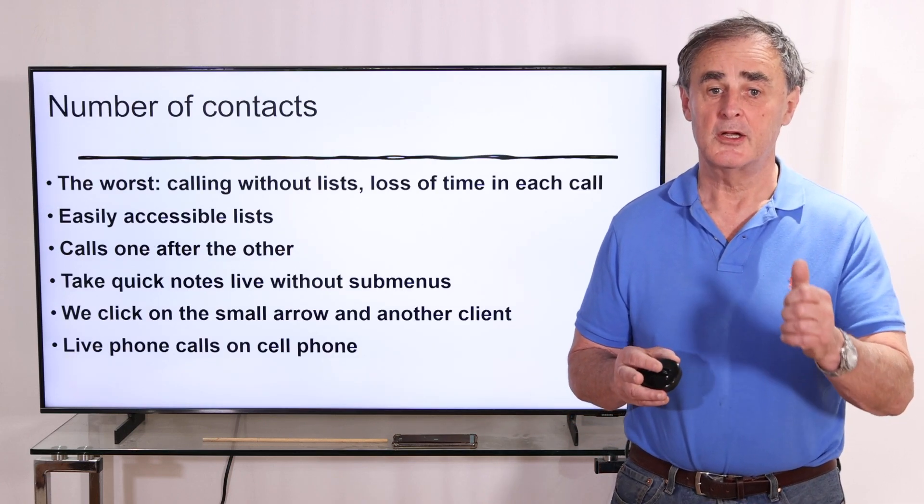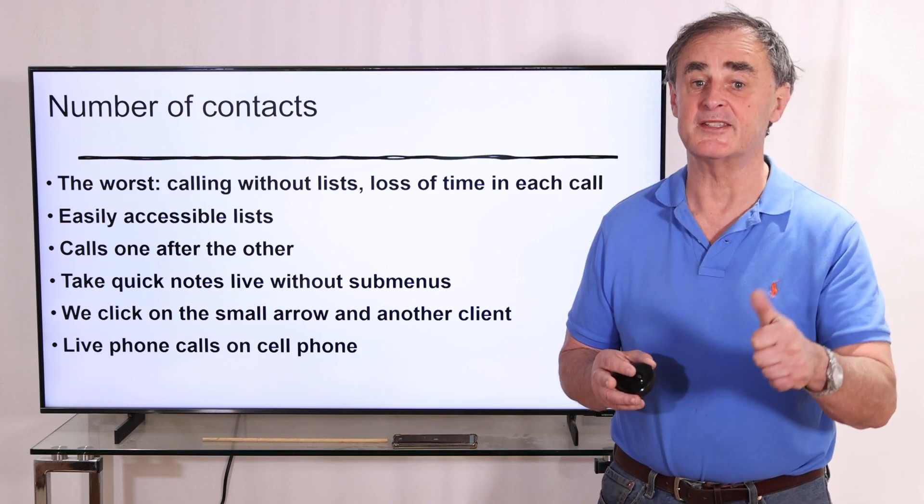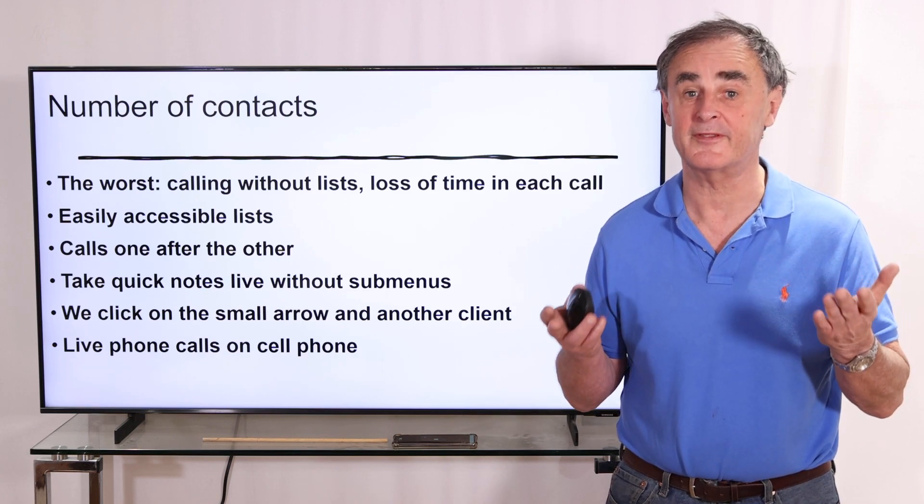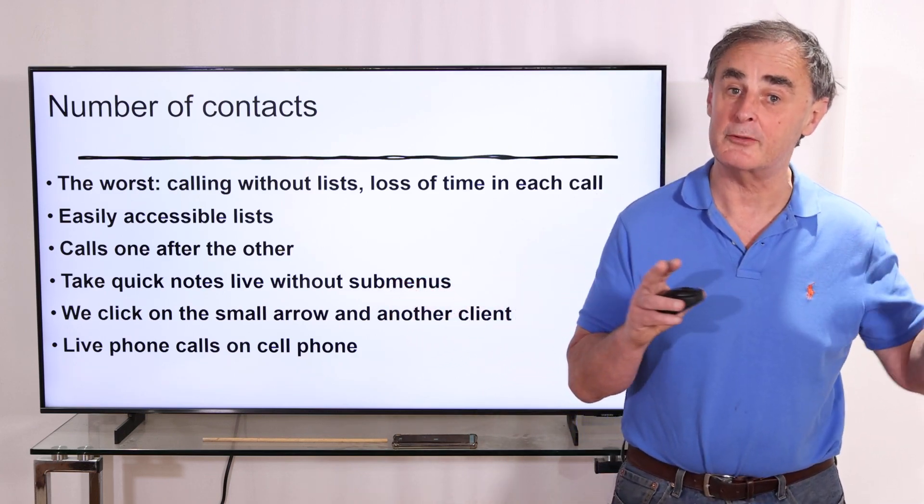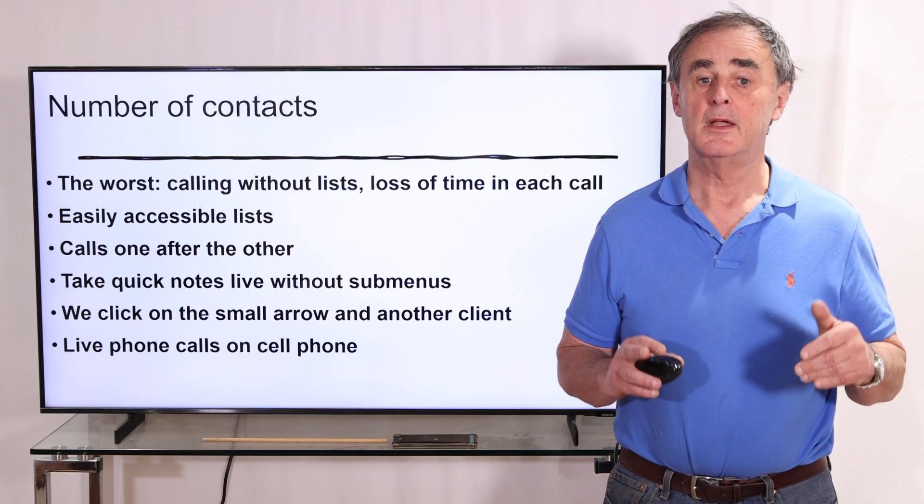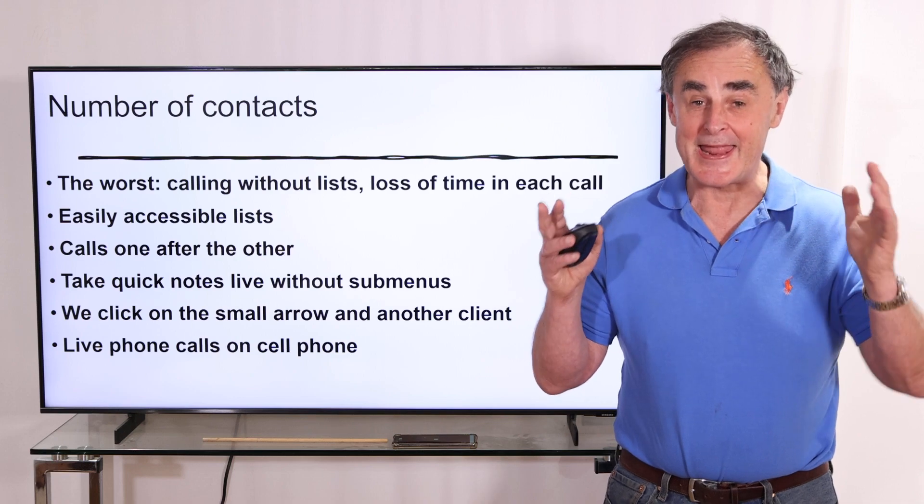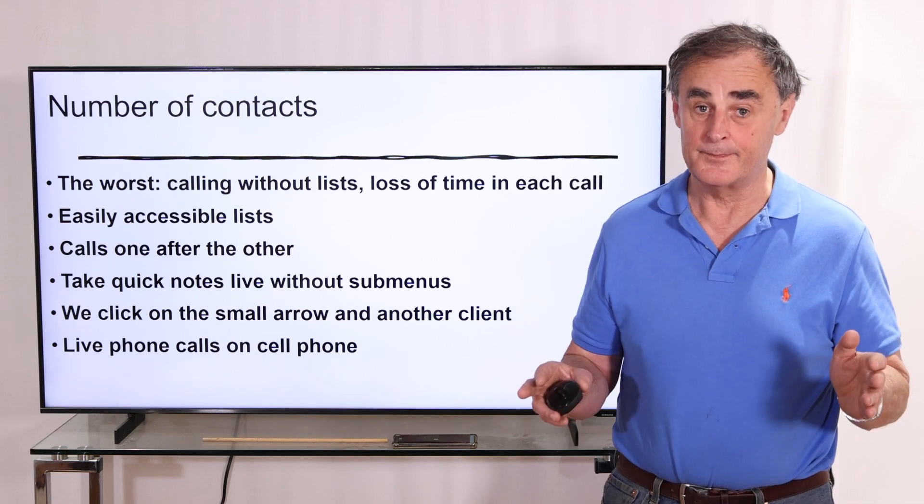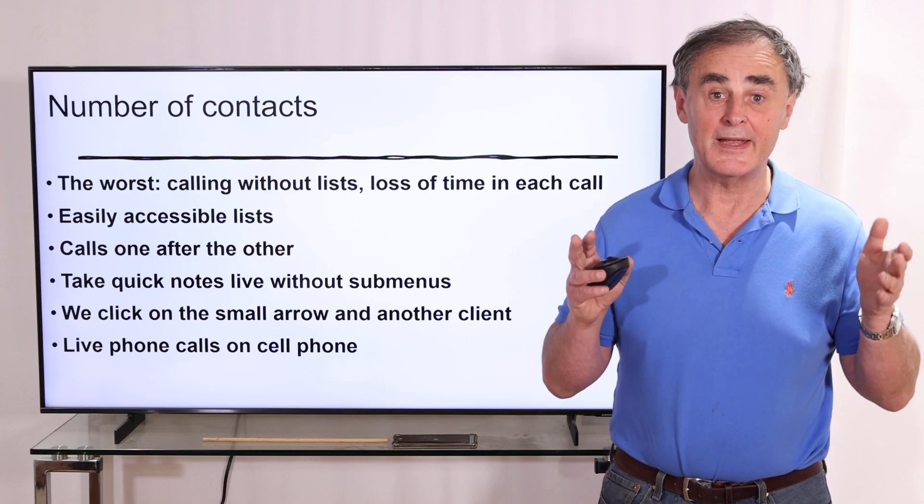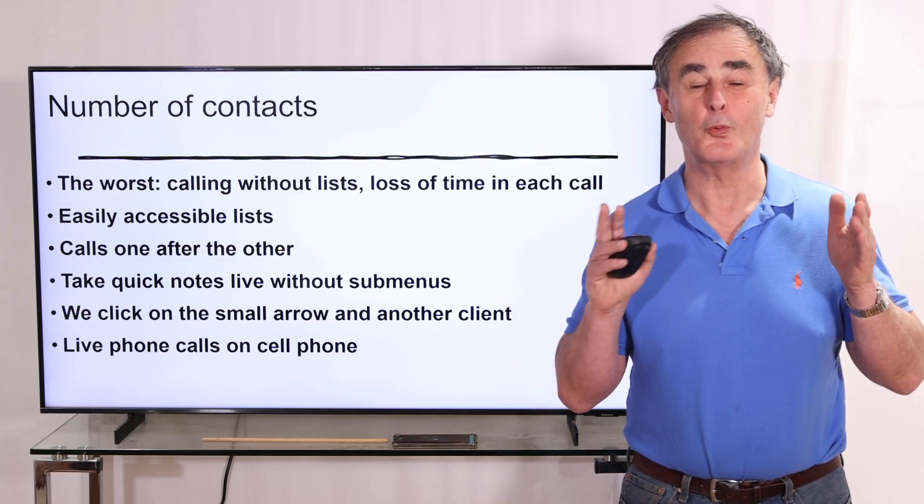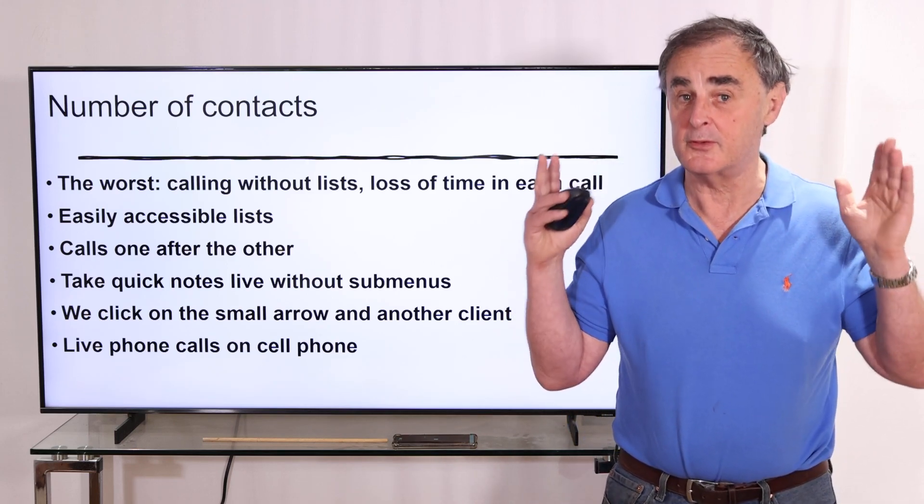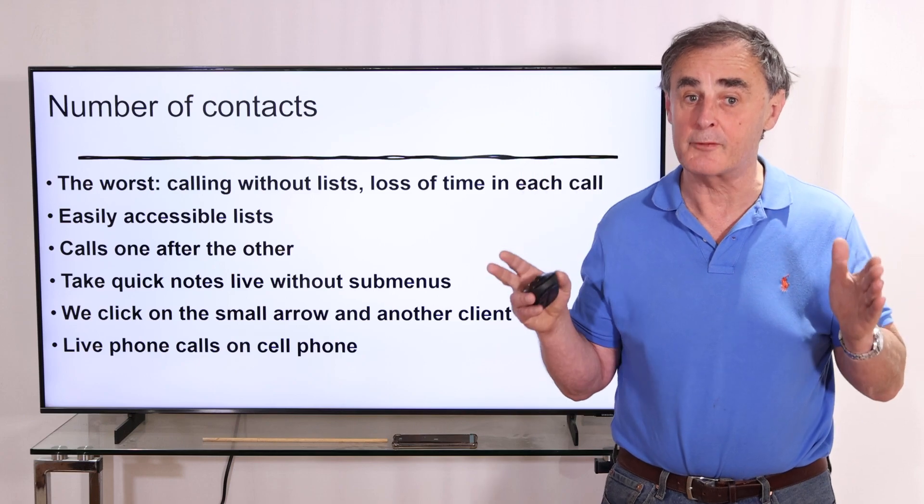First, the number of contacts. The worst is calling without lists because you're going to lose a lot of time each time you try to find a client. You have to have easily accessible lists, and that's what any CRM should provide. You should be able to make calls one after another without thinking too much, because otherwise you'll lose time and lose your focus.